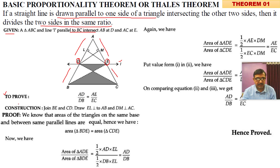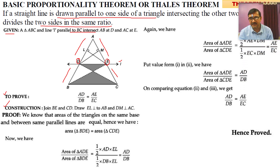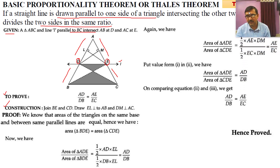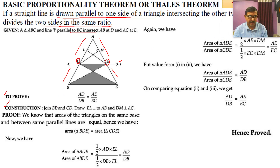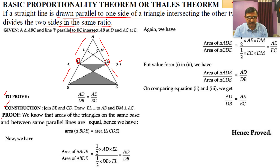Construction is very important for every theorem. Without construction, I don't think any theorem can be proved. So please go through the construction. Join BE and CD — see the figure, the dotted lines are BE and CE. EL is perpendicular to AB (or AD), and DM is perpendicular to AC and AE.